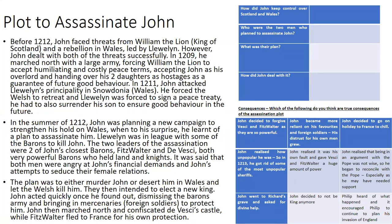But in the summer of 1212, John was planning a new campaign in Wales when he learned of a plot to assassinate him. Llywelyn was in league with some of John's own barons — specifically two of his closest barons, Fitzwater and Vesky, both very powerful men who held lands and knights. They were said to be angry at John's financial demands and his attempts to seduce their female relations. The plan was to either murder John or leave him in Wales and let the Welsh kill him, then elect a new king.